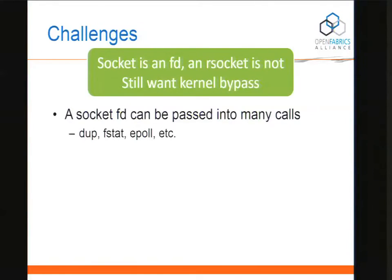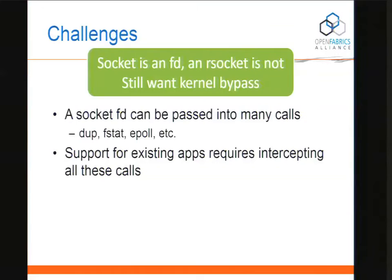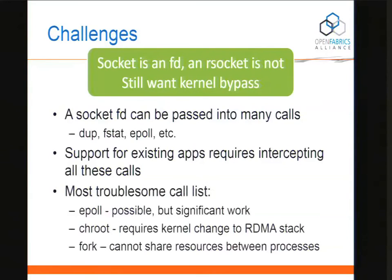What are the challenges? My R socket is not an FD, but a real socket is. So anything that passes an FD — if you're running an existing app, I need to intercept that call. Dup and fstat were calls I had to intercept based on apps I was trying to run. Epoll is a problem — it's fairly complex. To get performance, I need to intercept all the epoll calls and create an entire user-space implementation of what epoll does. The other troublesome call is chroot — VSFTP uses a chroot call, and that's a problem for the RDMA stack in general. Fork I can do somewhat, depending on what the app is doing with the fork call.